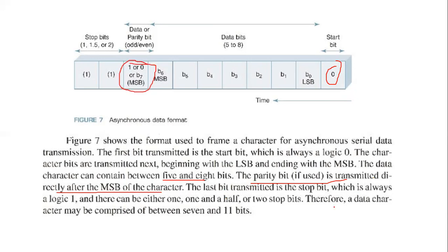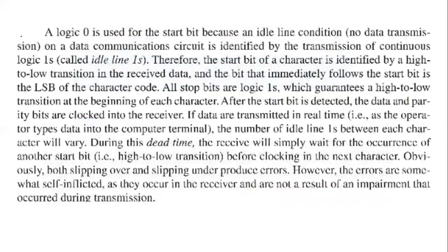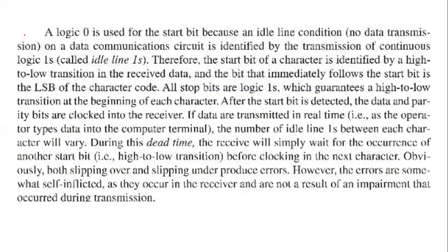The last bit transmitted is the stop bit, which is always logic 1. There can be either 1, 1.5, or 2 stop bits. Therefore, the entire data character may be comprised of between 7 and 11 bits. Logic 0 is used for the start bit because the idle line condition on a data communication circuit is identified by the continuous transmission of logic 1.